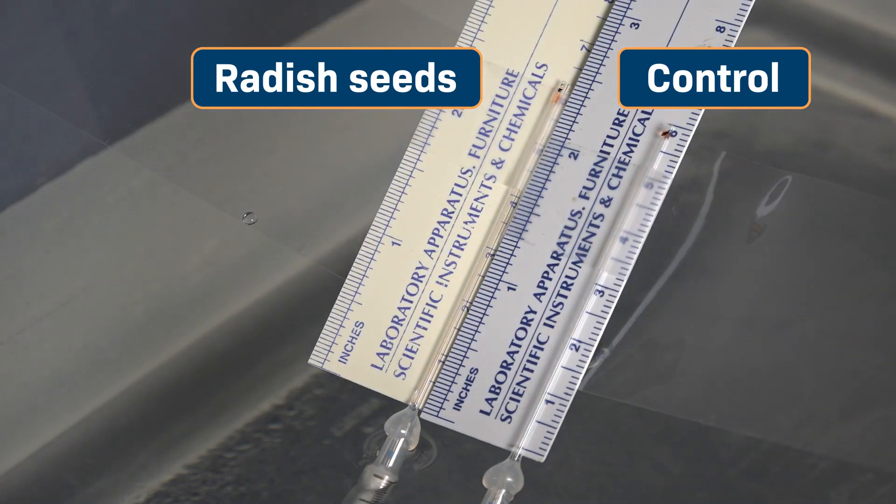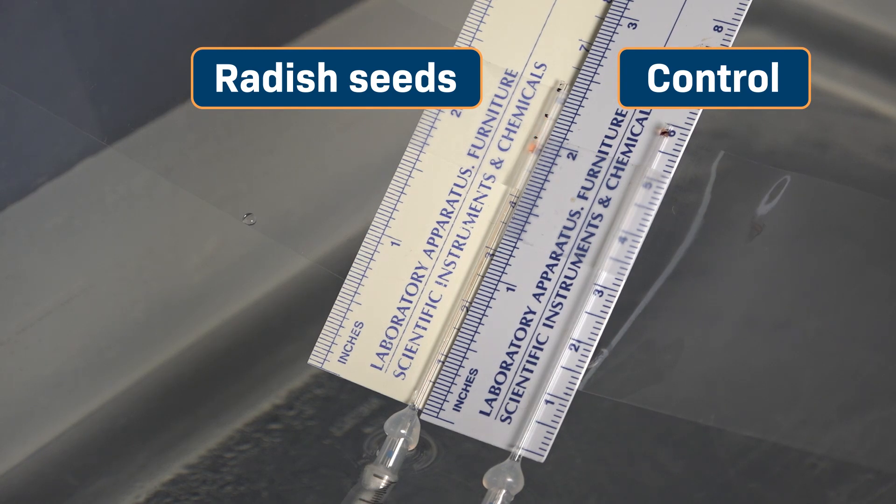The food coloring will make the position of the fluid easy to see. Easy visualization is so important in science, and sometimes it's as easy as adding a little food coloring. On each syringe, I'll mark the position of the fluid every 5 minutes, for 25 minutes in total, and record the temperature of the water at each time point.